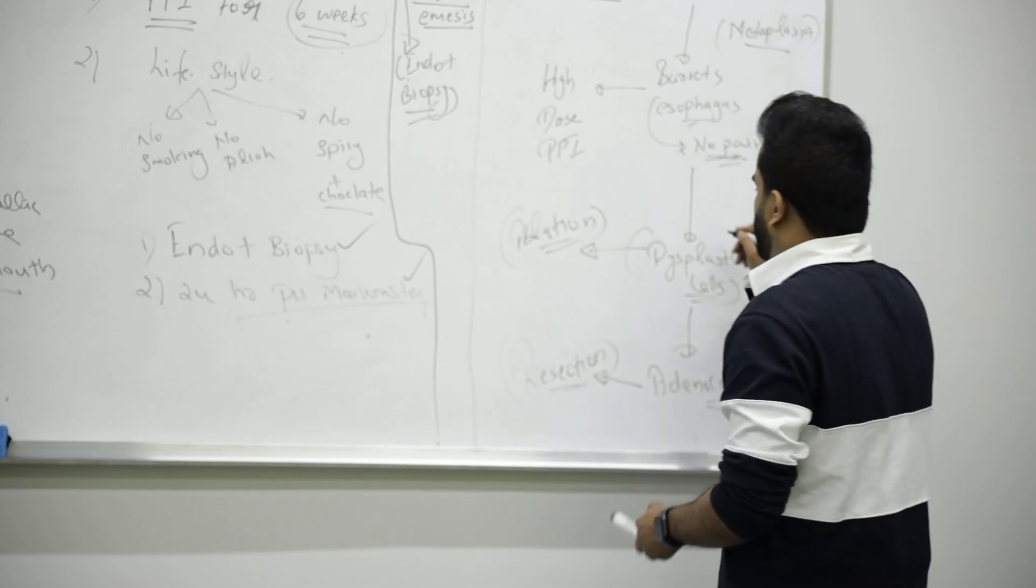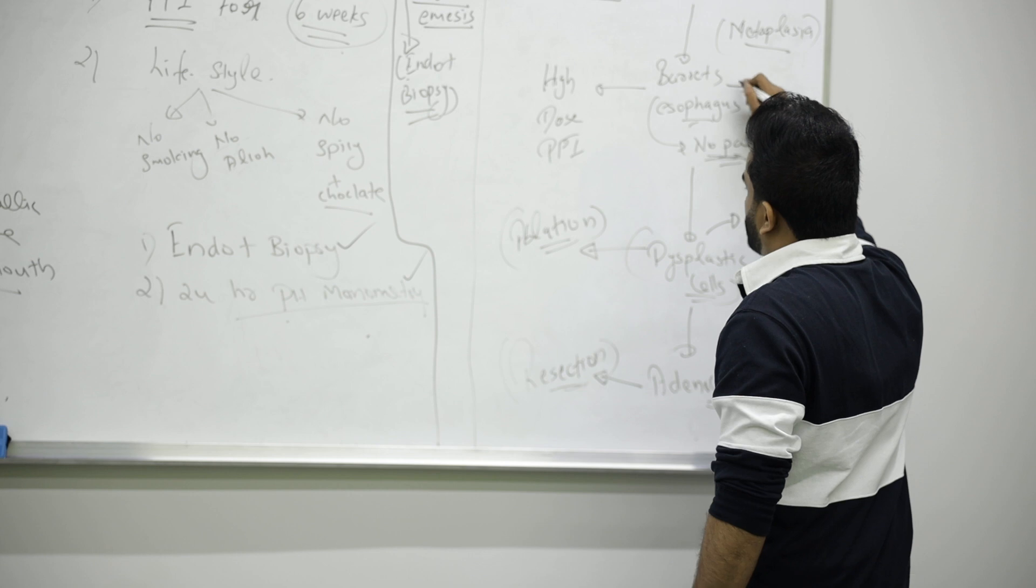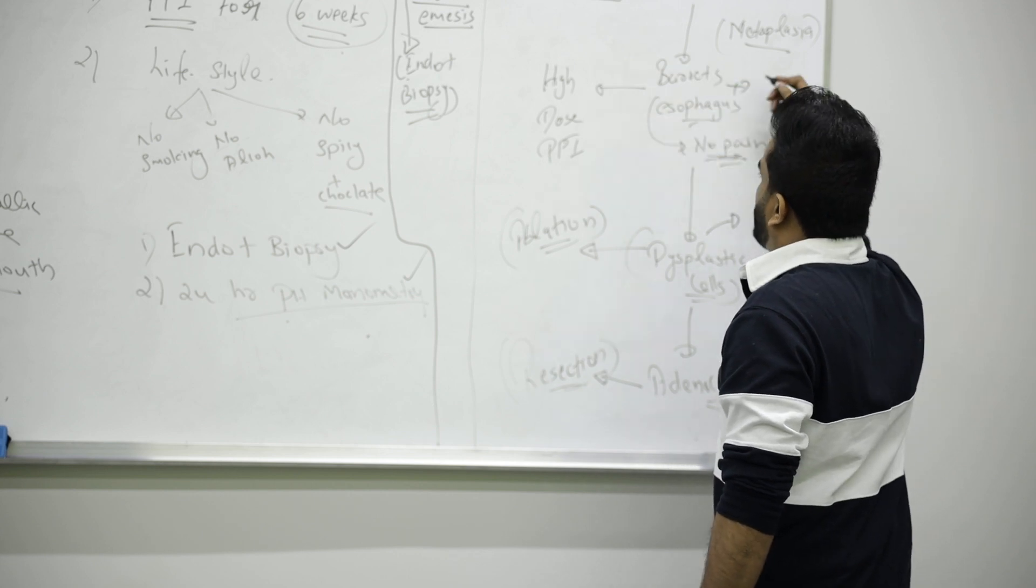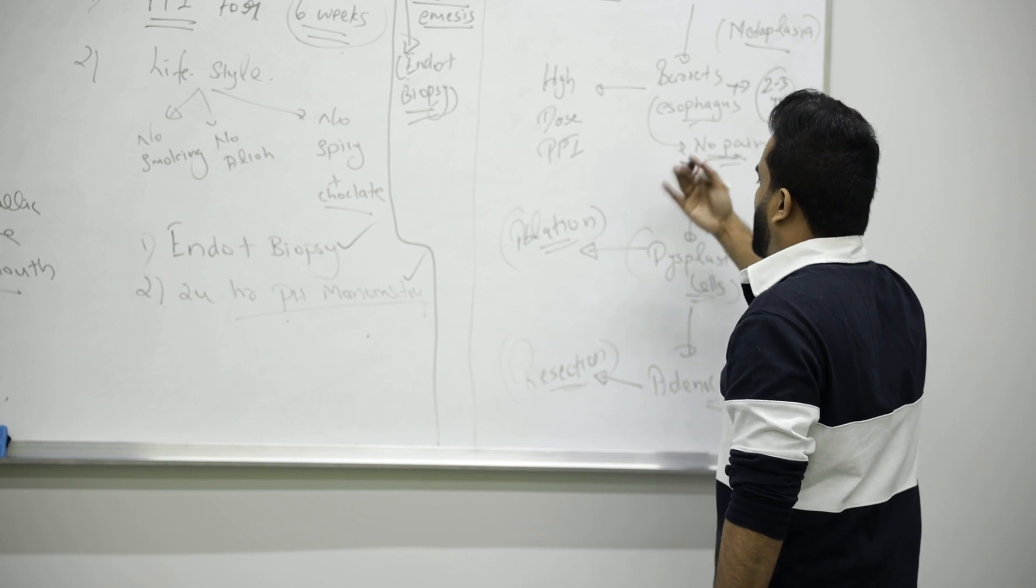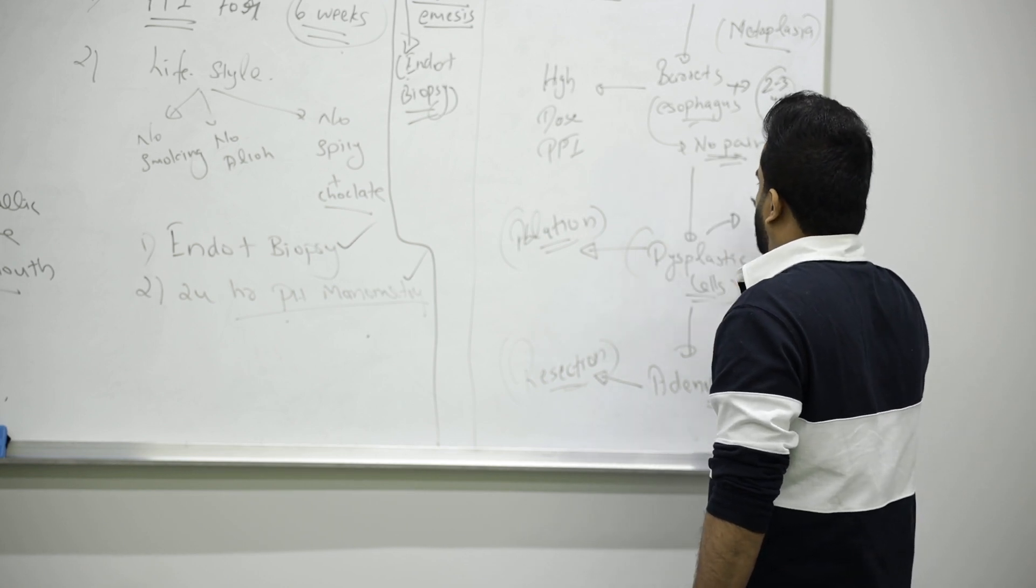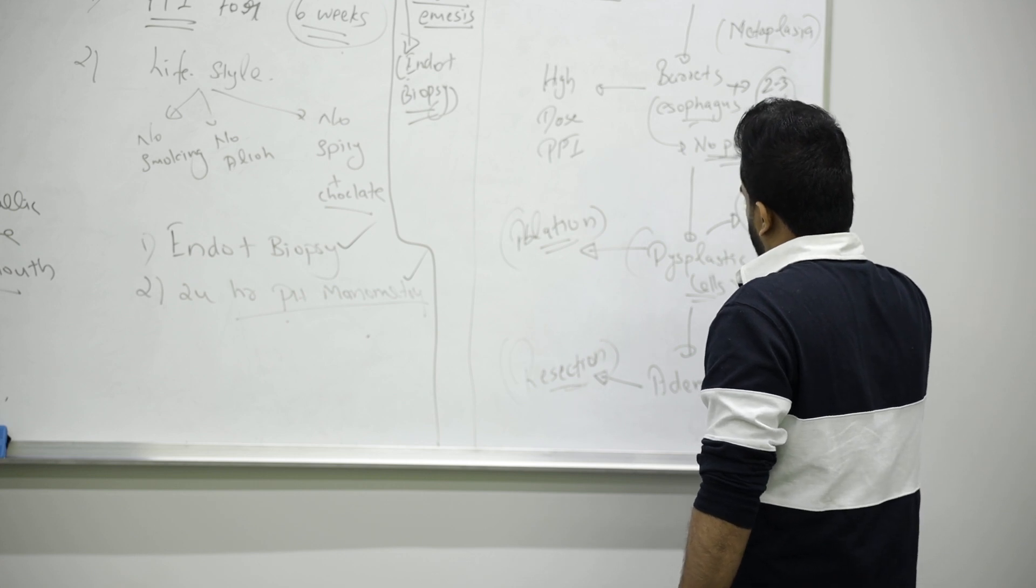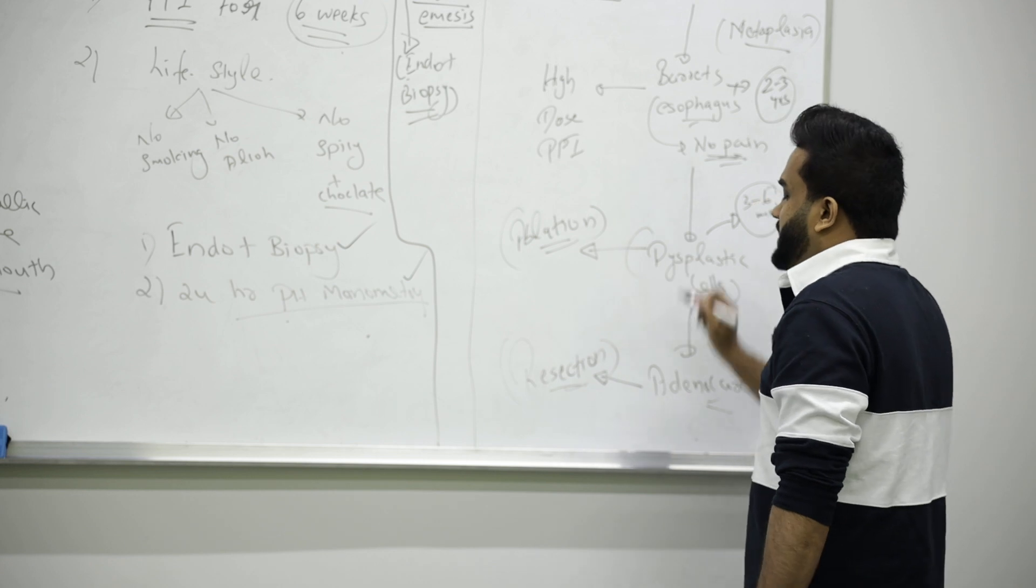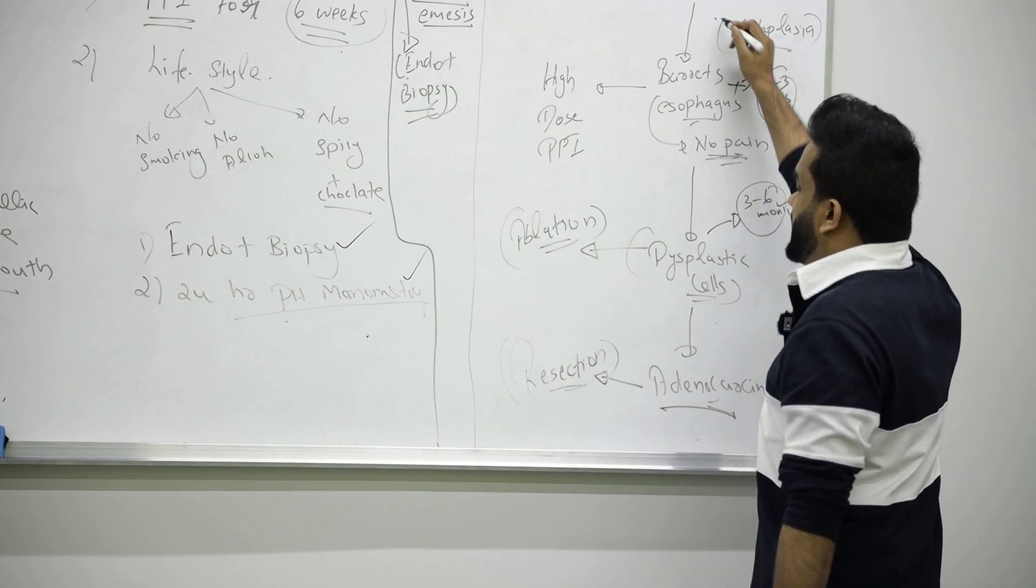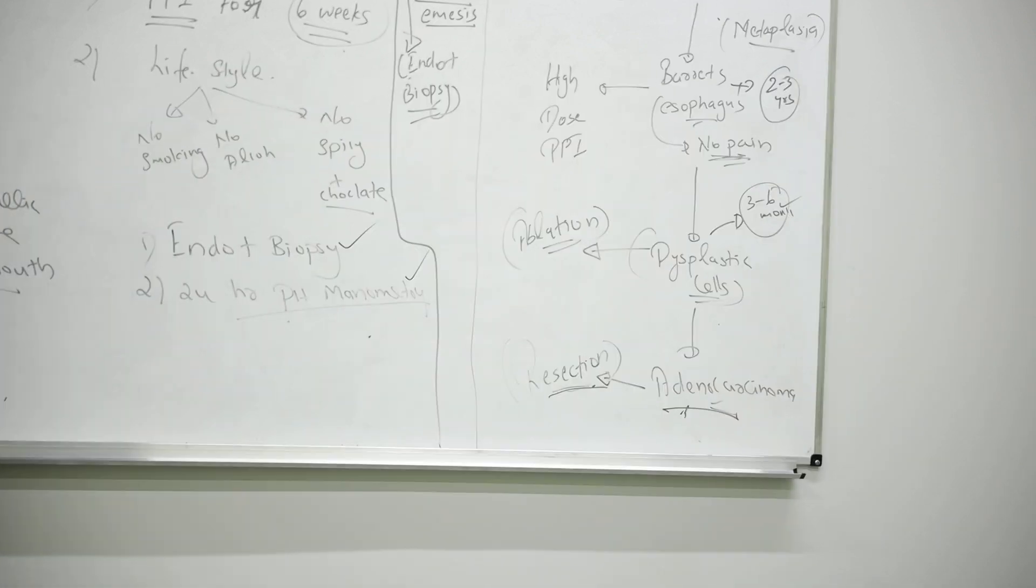If you see dysplastic cells, you should start rescoping. Even for Barrett's esophagus, keep doing endoscopy and biopsy for two to three years because at any time they can become dysplastic. For dysplastic, even every three to six months, continuously do endoscopy and biopsy. What is the objective? To find out if the GERD is becoming cancer.